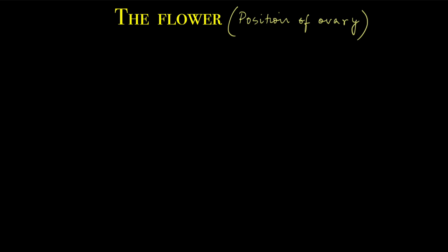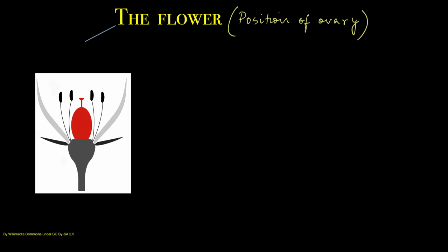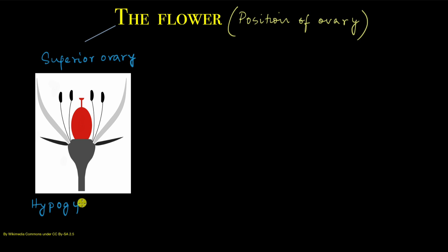Finally, we are going to look at the classification of the flower in terms of the position of its ovary with respect to the rest of the parts of the flower. In some flowers the ovary is present above the rest of the whorls — these are the sepals, these are the petals, these are the stamens, and this is the ovary. The ovary is at a higher level than all the others, so this is said to have a superior ovary. The flower is said to be hypogynous — 'hypo' means below and 'gynous' means female, so the rest of the parts are below the ovary.